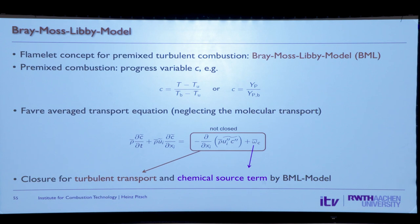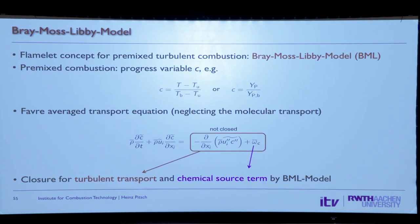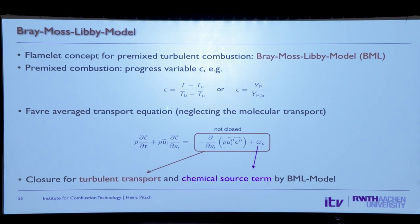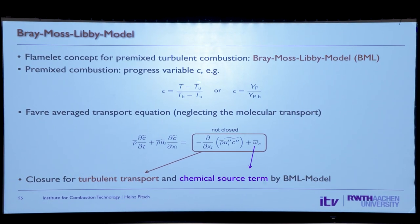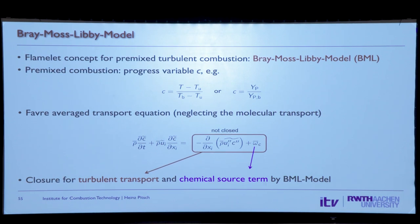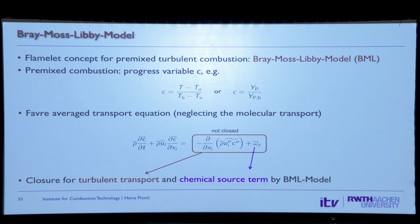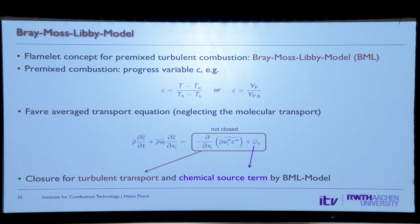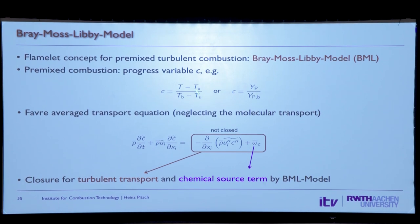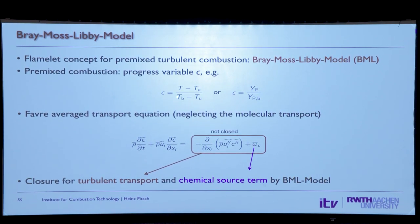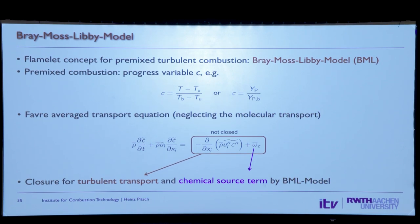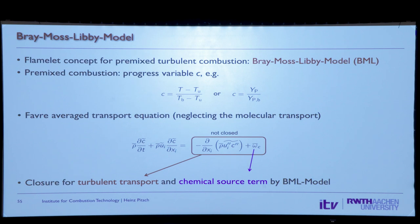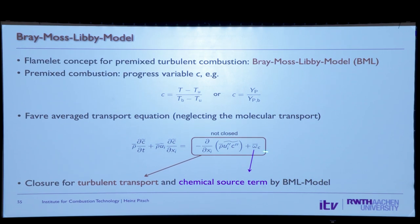The Bray-Moss-Libby model is a model for premixed turbulent combustion — really for what we called the corrugated flamelets regime — where the flame is basically infinitely thin. We introduce a reaction progress variable which could be based on the temperature or the product mass fraction, defined to go between roughly zero and one. From this I can derive a transport equation for this quantity, and then apply Favre averaging.